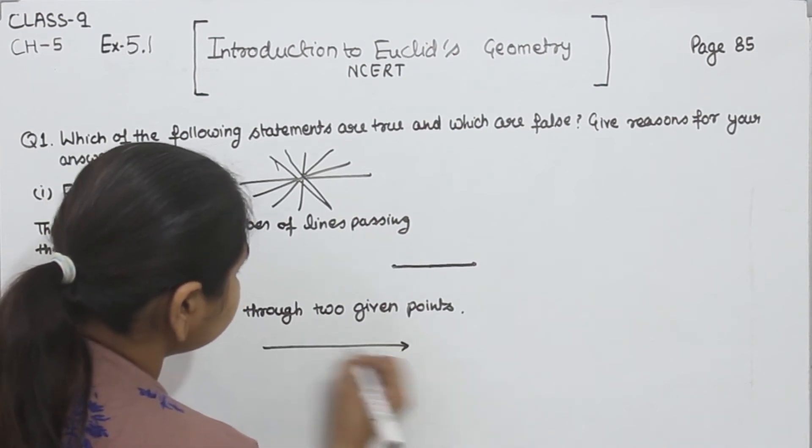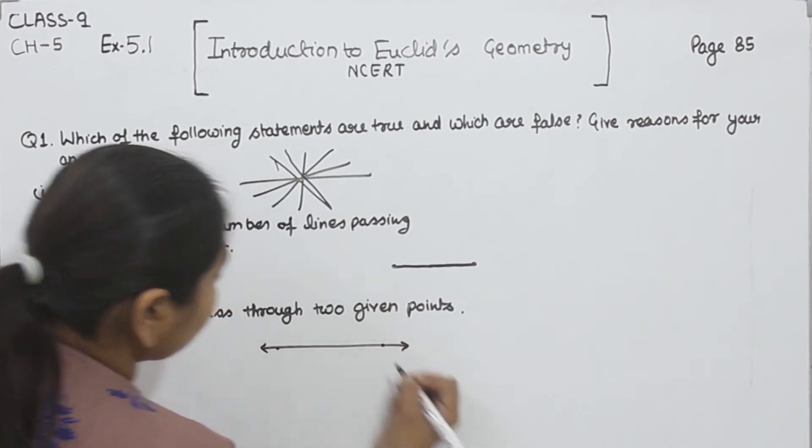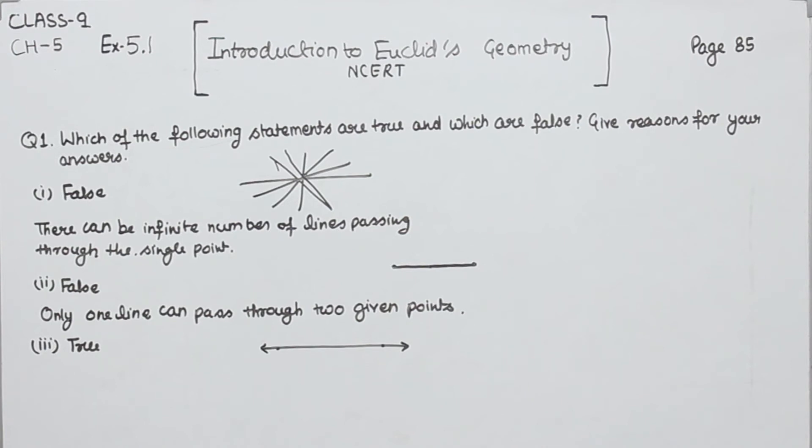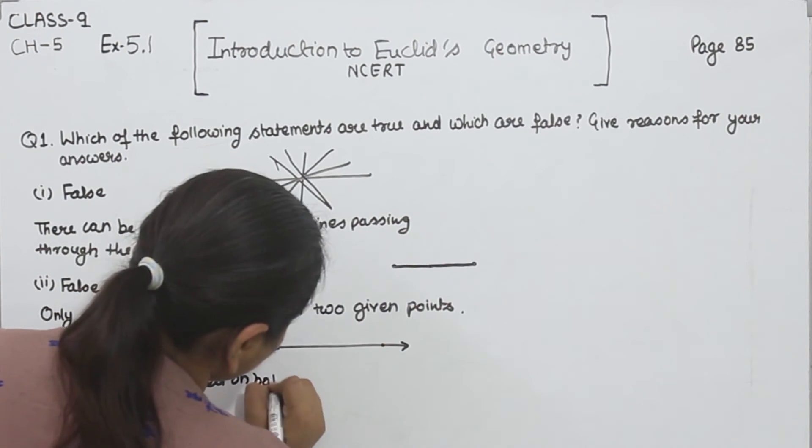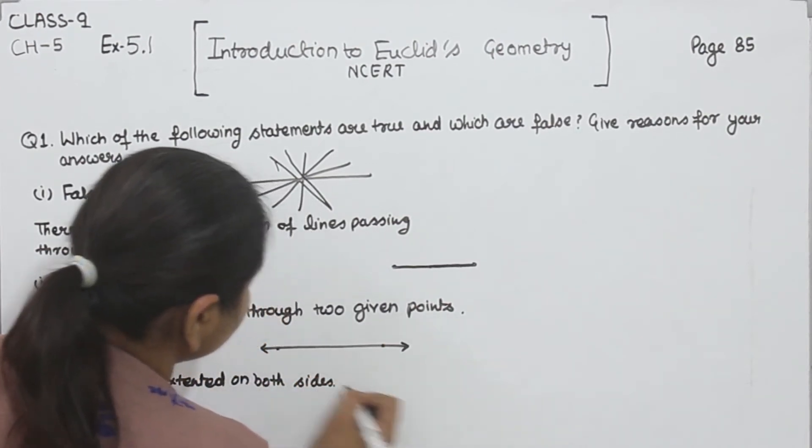This one is the line. This one is the indefinite line. We can terminate this one to both sides. We can extend this one both sides. A line can be extended on both sides.